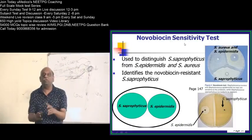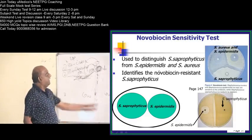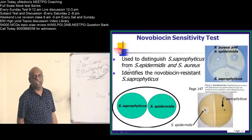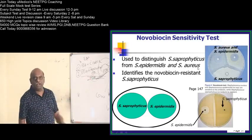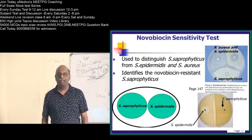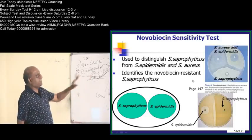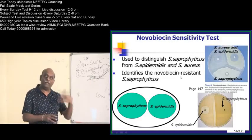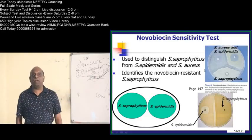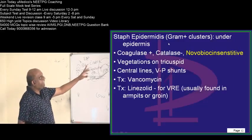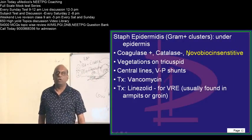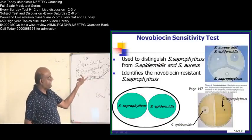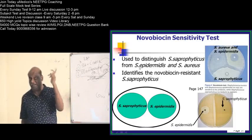Now, novobiocin sensitivity. To differentiate staphylococcus saprophyticus from staphylococcus epidermidis and aureus: saprophyticus is novobiocin resistant, whereas epidermidis and aureus are both novobiocin sensitive. Between epidermidis and aureus — epidermidis is catalase negative and coagulase positive — based on this we can differentiate epidermidis from aureus, as discussed in the master table.